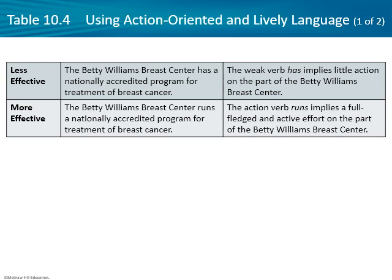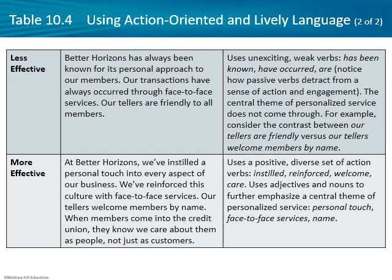Some other examples here — basically wordsmithing. 'The Betty Williams Breast Center has a nationally accredited program' uses a weak verb. More active: 'The Betty Williams Breast Center runs a nationally accredited program' — 'runs' applies a little bit more action. Similarly, 'Better Horizons has always been known for its personal approach, our transactions have always occurred through face-to-face services, our tellers are friendly to all members' — those are passive and linking verbs. Compare that to the second example at Better Horizons...